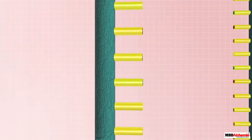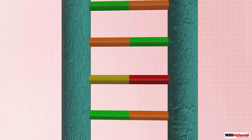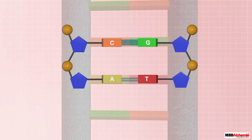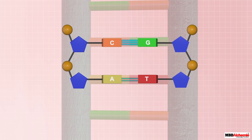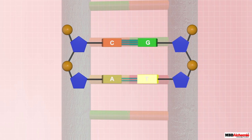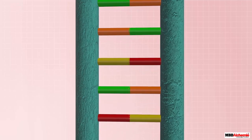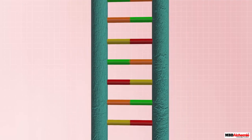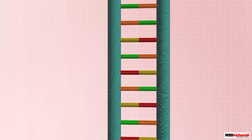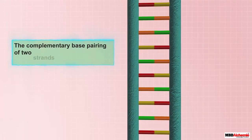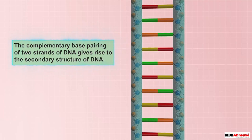The nitrogenous bases of one strand of DNA join the nitrogenous bases of the other strand by forming hydrogen bonds. Cytosine of one strand always joins guanine of the other by three hydrogen bonds, and adenine of one strand joins thymine of the other by two hydrogen bonds. Since the bases always pair with complementary bases, this is called complementary base pairing, which is the secondary structure of DNA.